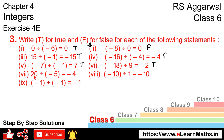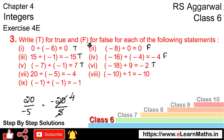Let's do the next part. Next part: twenty divided by minus five — does minus four come? Twenty divided by minus five — multiply numerator and denominator by minus one, and five fours are twenty, so minus four comes. Hence this statement is TRUE.